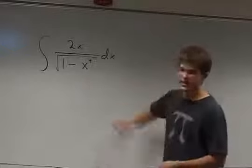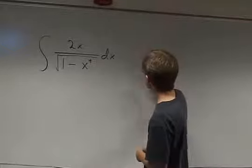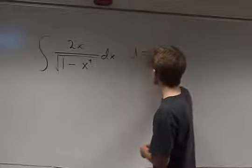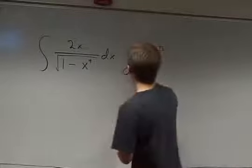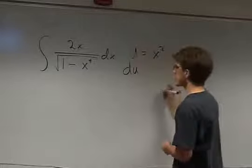So I'm going to go with x squared as u, take the derivative of that, and move the dx over.